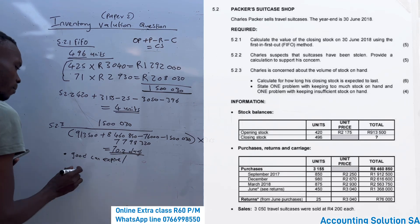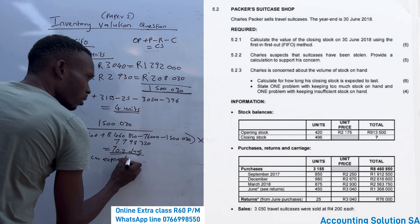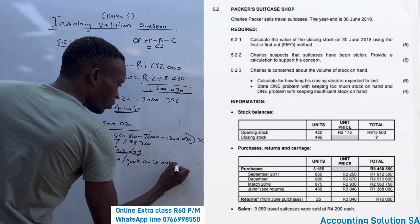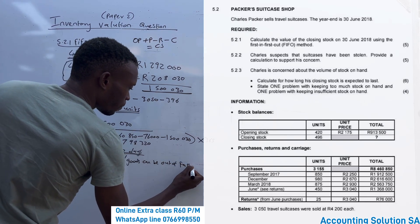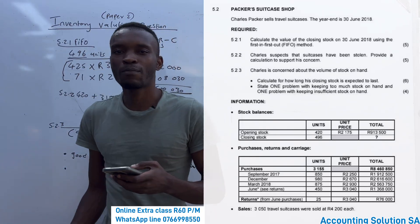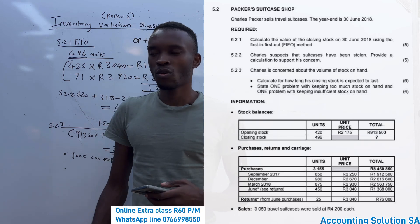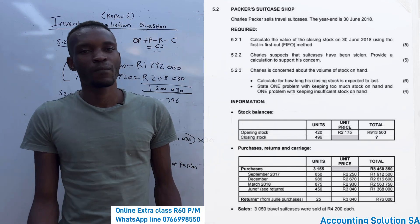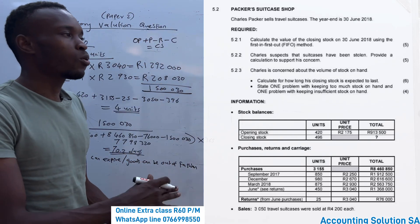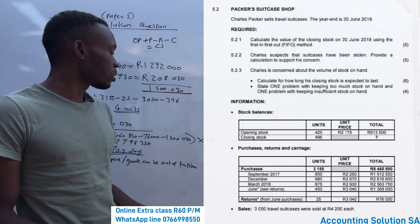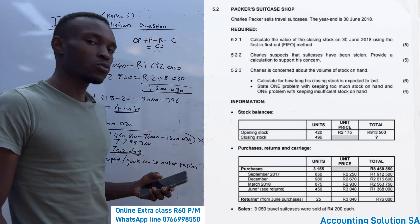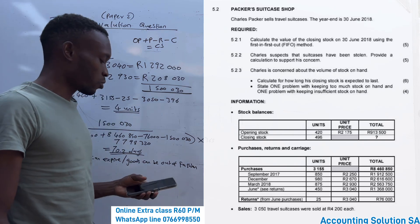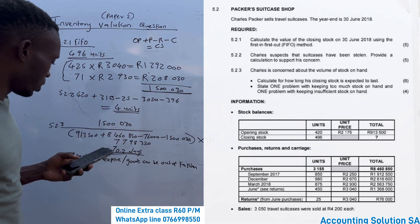For example, if Samsung kept a lot of the E250 model, who would buy it now in 2023? No one, because it is out of fashion — many new cell phones have been introduced. The longer you keep old stock, the more new technology gets introduced, making the old stock obsolete.